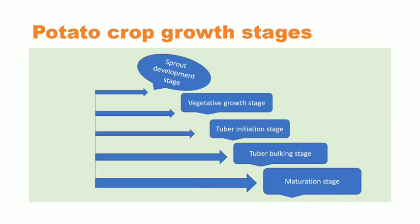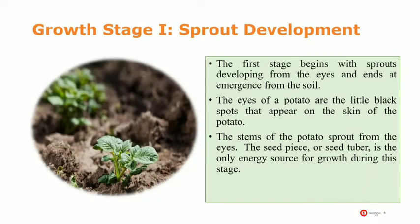The first stage is sprout development. This stage begins with sprouts developing from the eyes of the potato and ends at emergence from the soil. The eyes are very important for sprouting — they are the little black spots that appear on the skin of the potato, and the stems sprout from these eyes.